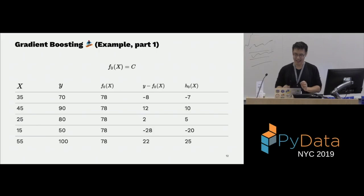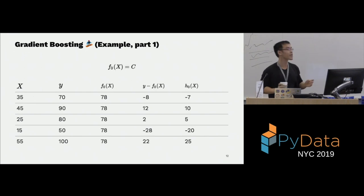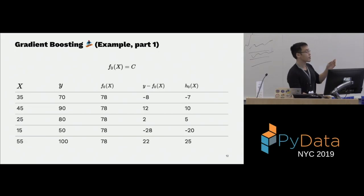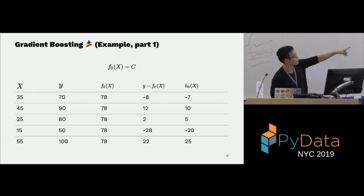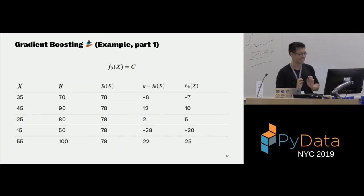Let's make this concrete with numbers. Say X is your age and Y is your income in thousands of dollars — one feature. F(0) is the mean, which is a constant. In this case the mean of Y is 78, so that's the initial prediction. We calculate Y minus F(0) — the difference between predicted and actual value. H(0) is trying to predict that residual, doing its best.